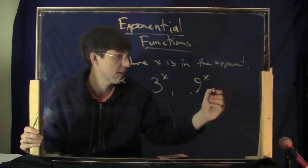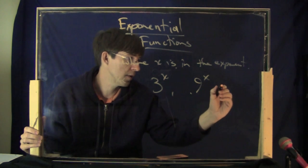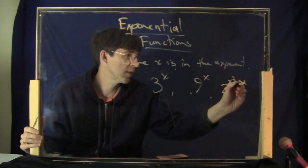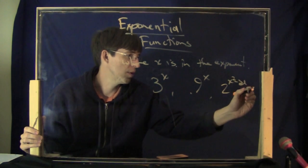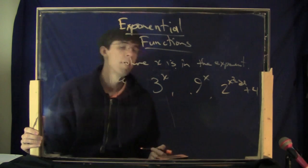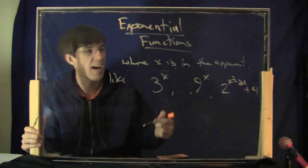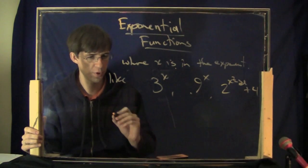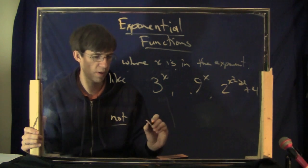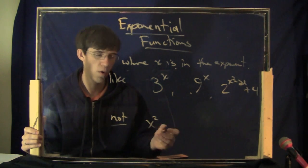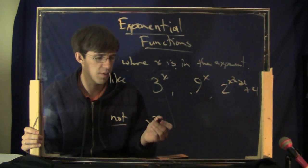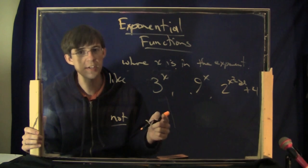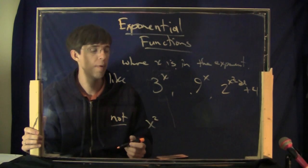It doesn't have to just be x up there. It could be something like 2 to the power x squared minus 3x plus 4. The x is inside of the exponent — that's what I mean when I say exponential function. This does not include things like x squared. That's a polynomial, where the x is downstairs and there's a constant in the exponent.